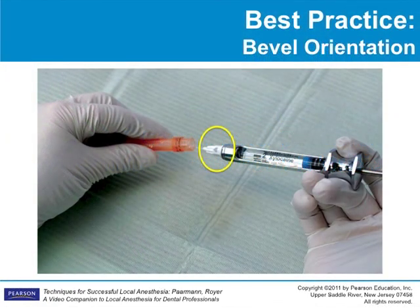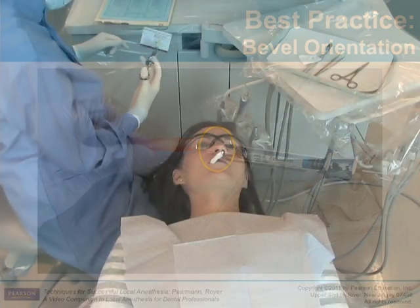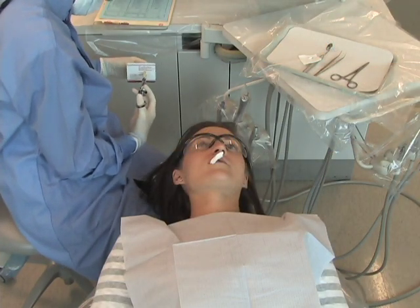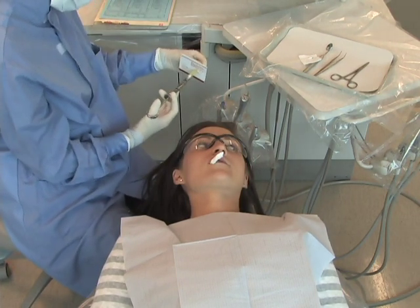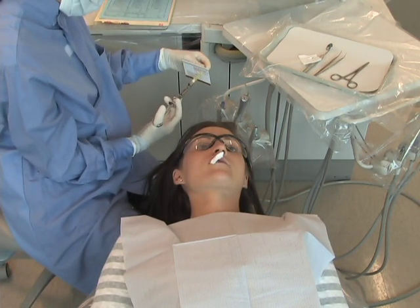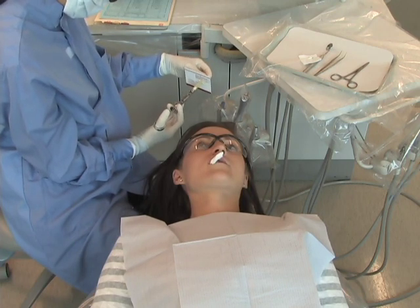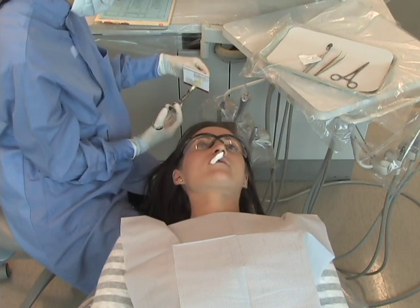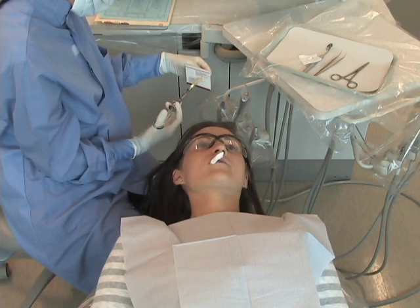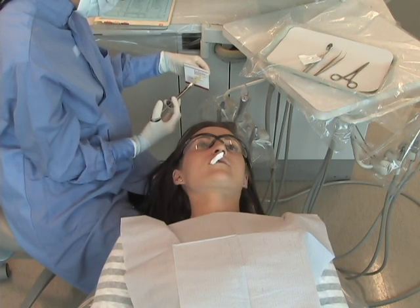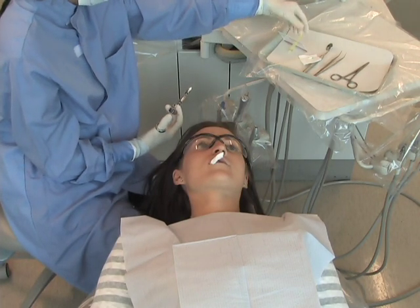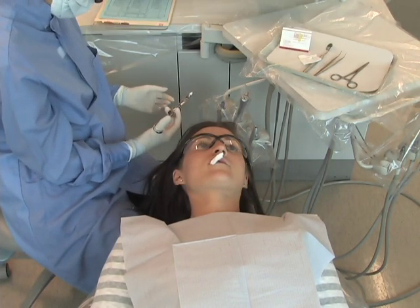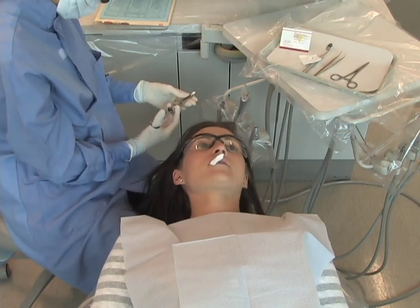Orient the syringe by assuring that the bevel of the needle will face the bone, and the large window of the syringe will face the operator. The large window should always be turned toward the operator during an injection to allow easy observation of the speed at which solution is being deposited and whether the aspiration is positive or negative. Many clinicians believe the bevel of the needle should be facing the bone prior to needle penetration, so that the anesthetic solution automatically flows toward the nerve and to increase patient comfort.